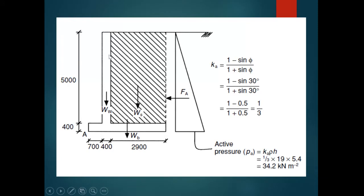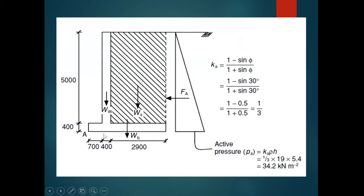The retaining wall is divided into two parts. The upper part is your wall or stem, and the lower part is your base. The base is further divided into two parts: we have a toe and a heel. Since the pressure on these two points are different, we will be designing them differently. The toe will be designed with a different moment, the heel with a different moment, and the stem with a different moment.